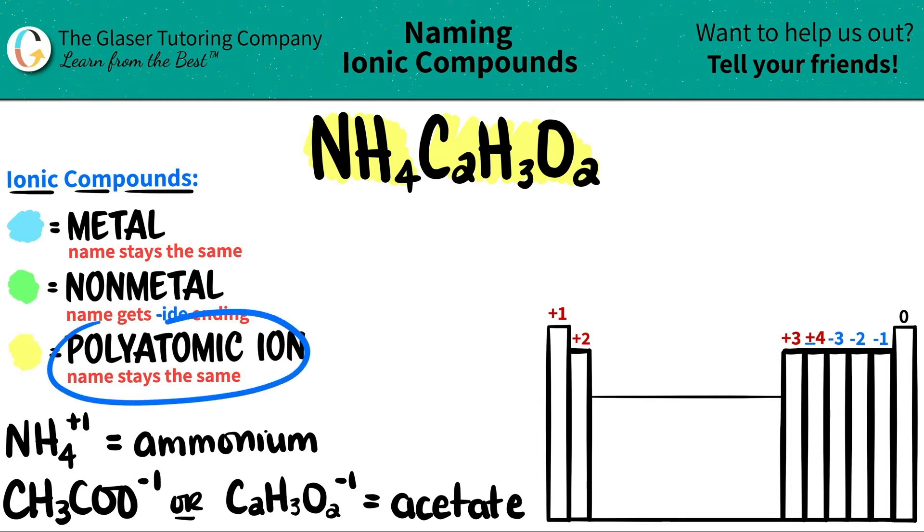Polyatomic ions are very easy to name because those names always stay the same. So NH4 is just ammonium, so I'm just going to write ammonium.